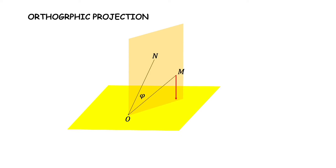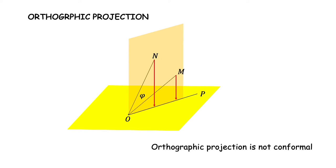If I project OM, I get the projection OP. Since OM and ON are in the same vertical plane, ON will also project along the same line. Thus, looking at the projections of OM and ON, I do not have any information regarding the angle phi between them — the angular relationship is lost in the projection. So orthographic projection is not a conformal mapping.